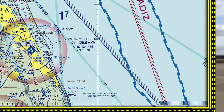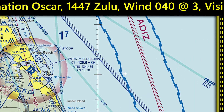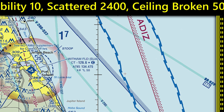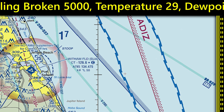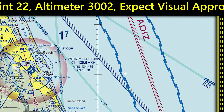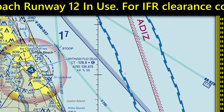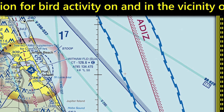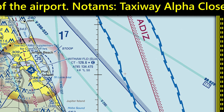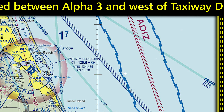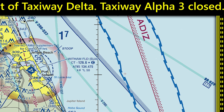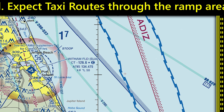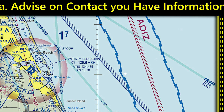So let's monitor ARCOM 2 and listen to an ATIS, and then do some hammer time on it. [ATIS playback] The ATIS is the Alpha 3 closed. Expect taxi routes through the ramp area. Advise on initial contact, information OSCAR.